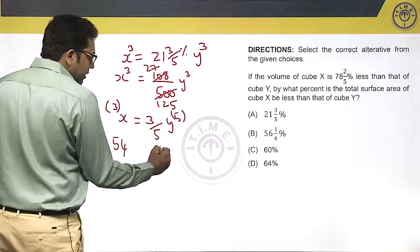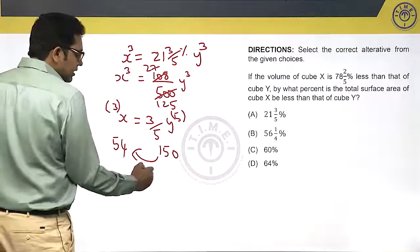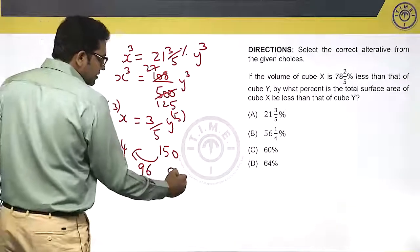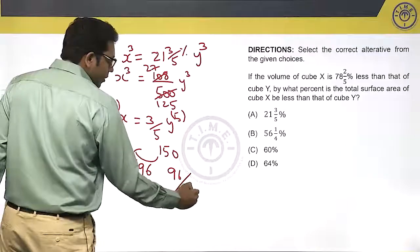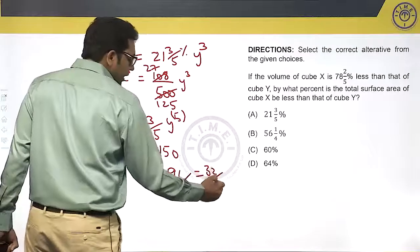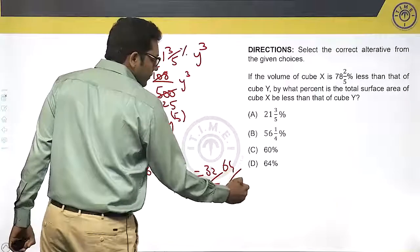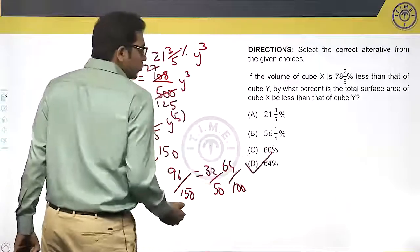6 times 5², which is 150. So 54 is how much less than 150? 96. So 96 upon 150 is nothing but 32 upon 50. Double it, I'll get 64 upon 100. Therefore 64 percent less.